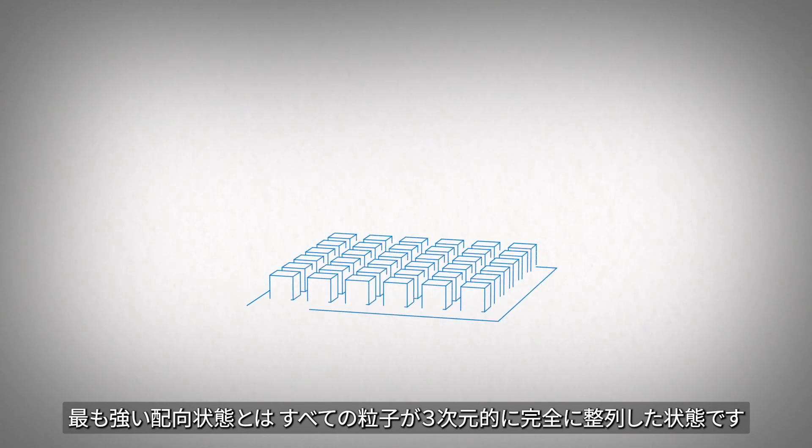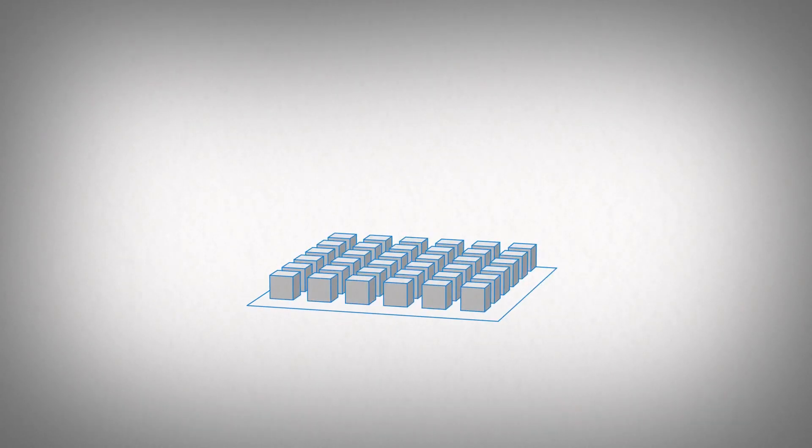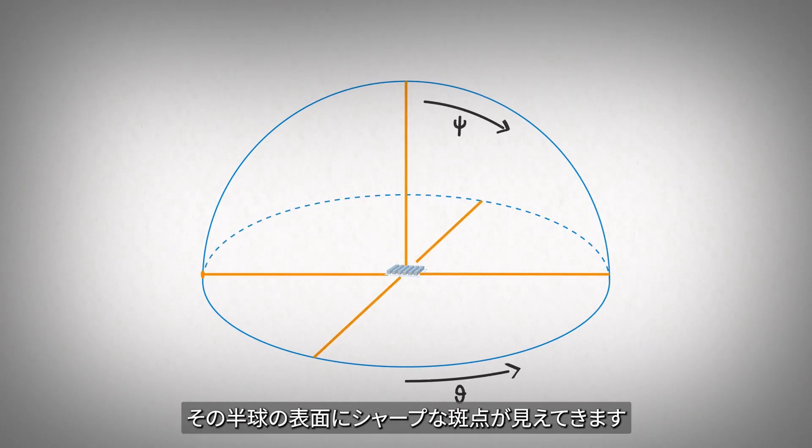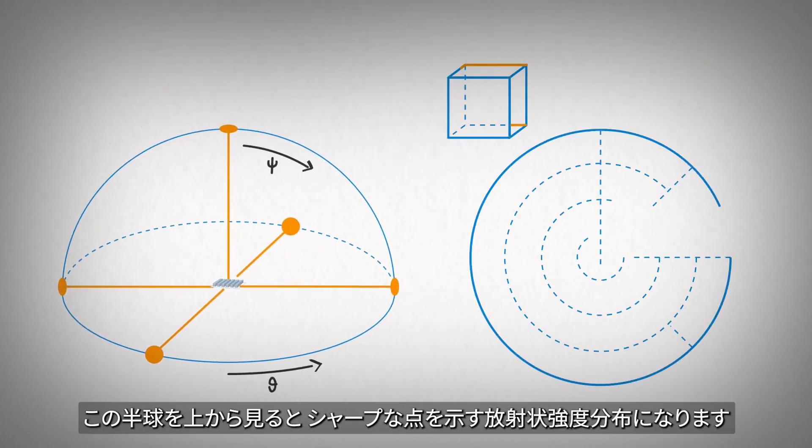In the case of the strongest orientation, we can imagine every particle being in perfect alignment. If we project the surface normal of the crystals to a hemisphere surrounding the paper, we would see sharp spots positioned on the surface. Looking down on this hemisphere shows a radial map with sharp spots.